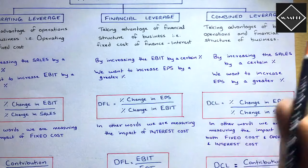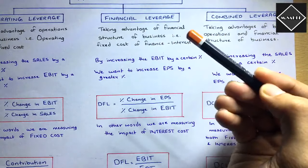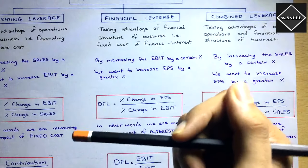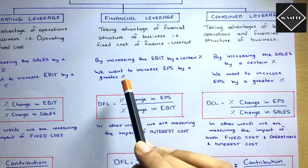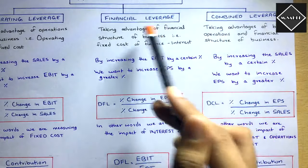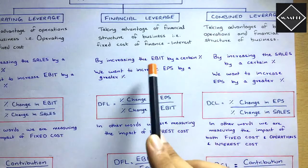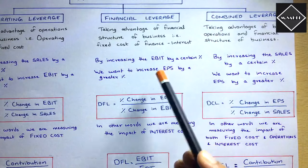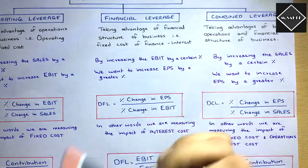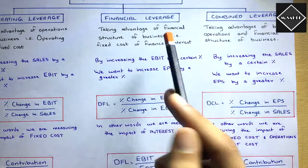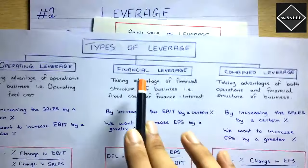Financial leverage works on the same concept. Due to the fixed cost of finance — that is, interest and preference dividend — the business gets an advantage. If EBIT increases by a certain percentage, EPS increases by a greater percentage. For example, if financial leverage (DFL) is 3 times and EBIT increases by 1%, EPS will increase by 3%. Here we are measuring the fixed cost of finance, which is why it is called financial leverage.